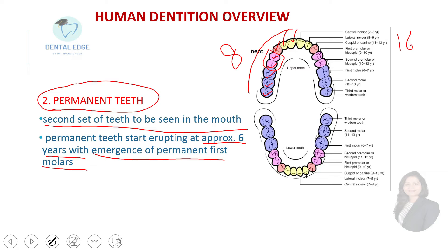In the lower arch as well there are central incisor, lateral incisor, canine, first premolar, second premolar, first molar, second molar, and third molar — 16 teeth. So in total there are 32 permanent teeth. The first permanent tooth to erupt does so at the age of six years, and that is the first permanent molar.